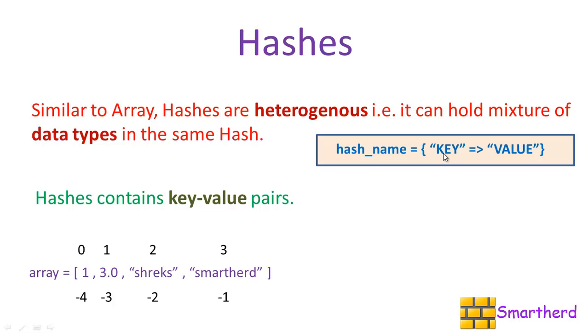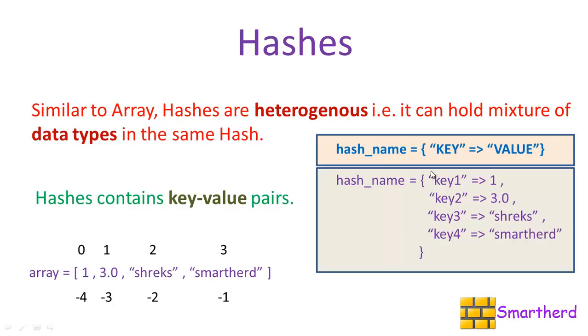Let's see an example. This is what a hash looks like. Here 0, 1, 2, 3 are index of these values. Here 1, 3.0, Shakes, SmartHerd are the values and its index, that is the keys, are key1, key2, key3 and key4.